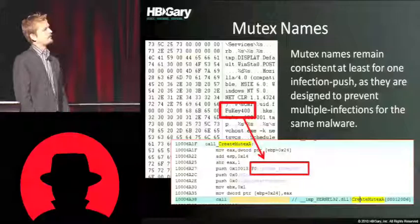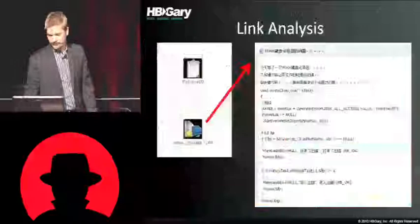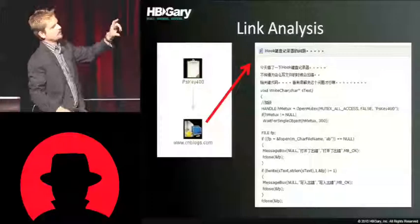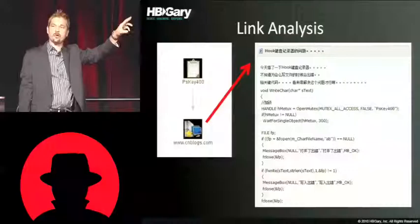Here's another example: PSQ400, a Chinese keylogger. There's a mutex name visible in the disassembly being pushed onto the stack in a call to CreateMutex. I did a search — using Maltego in this case — that found a link in China, where I saw source code. That source code actually calls OpenMutex instead of CreateMutex, so it's not the same source code, but it's using the same mutex name. This led me into a social space where I could start doing additional link analysis on this target.